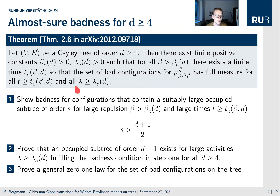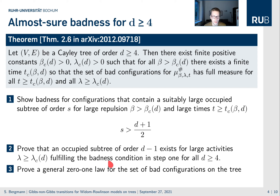The proof has three distinct steps. The first step is to show that if a configuration contains a suitably large occupied subtree of order d plus one half, occupied by plus and minus spins, it is a bad configuration for large beta and large times t. Then we show that these occupied subtrees become typical, using a standard Galton-Watson tree argument, so the set of bad configurations has positive probability. In the last step, we prove a 0-1 law for bad configurations, which leads to full-measure badness for the specific parameters.